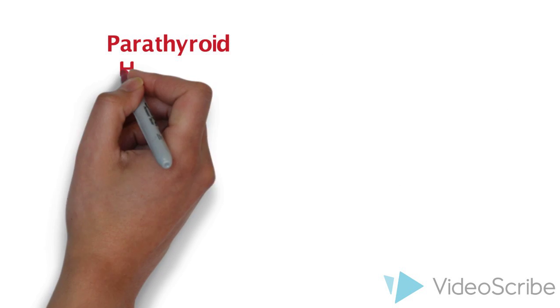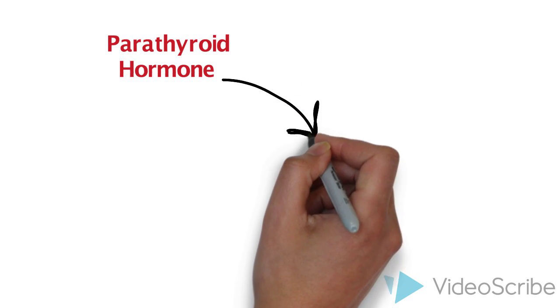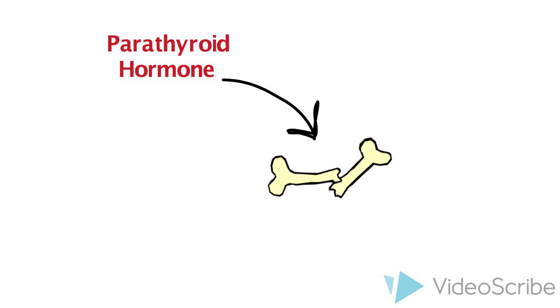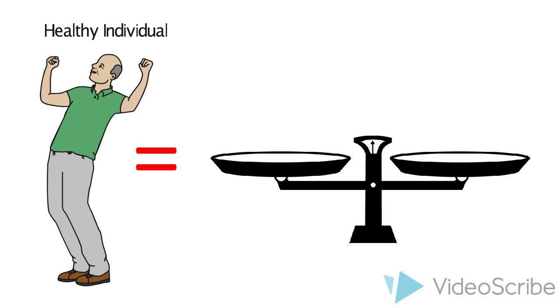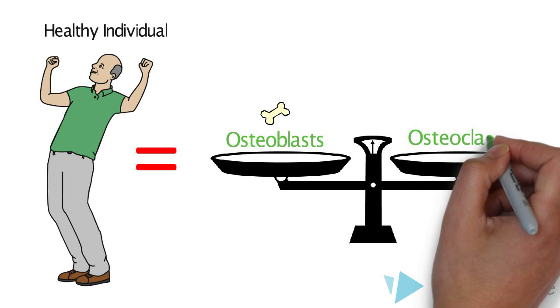On the other hand, the parathyroid hormone regulates osteoclasts, which break down the bone matrix, releasing calcium and phosphates into the bloodstream. In healthy individuals, the osteoblast activity is in equilibrium with osteoclast activity.